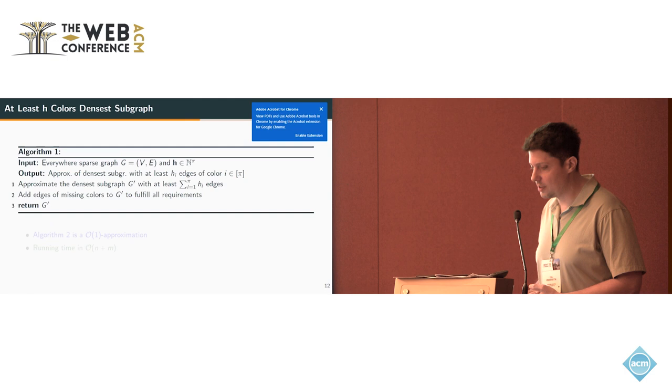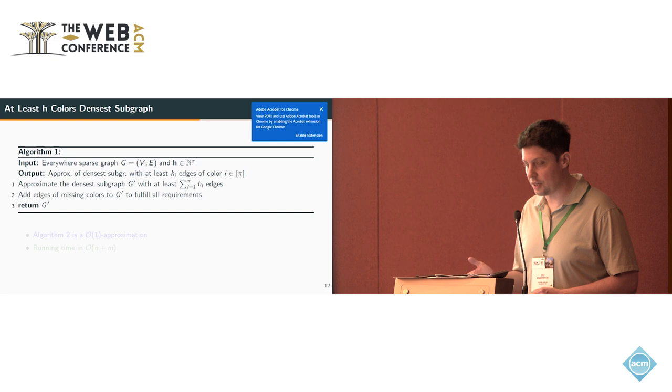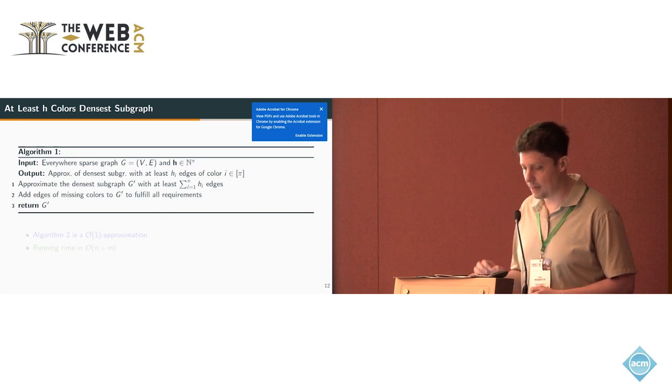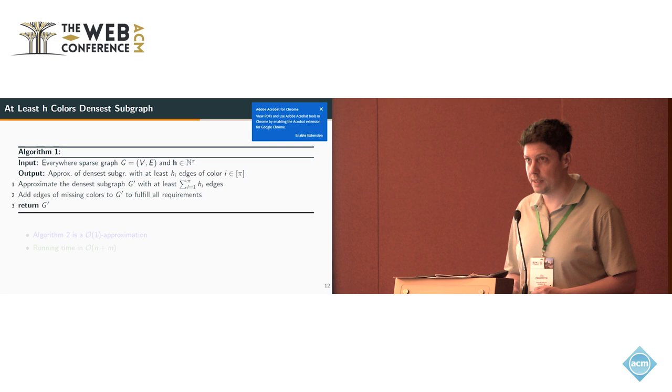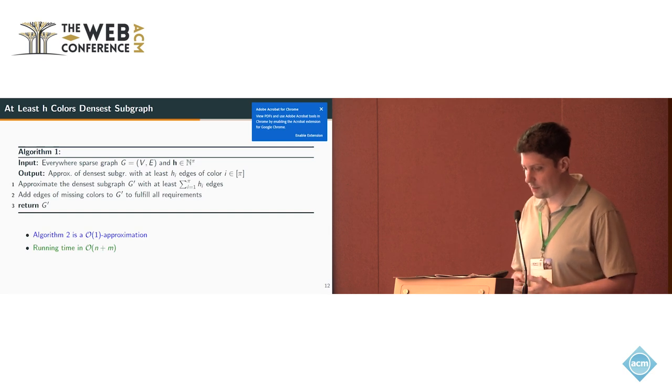We can use this for approximating the at-least-H-colors dense subgraph. This is very easy now. We approximate the densest subgraph with at least H edges, where we set H to be the sum of all color requirements. If we miss some color requirement, we add the missing edges that have the right colors. This is a constant-factor approximation and runs in linear time.